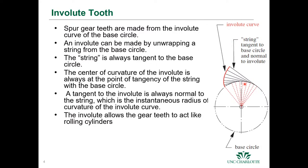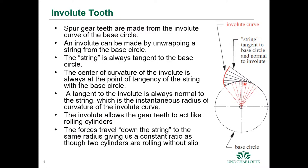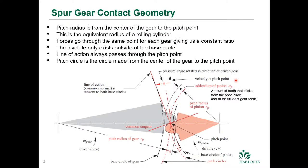The forces follow down the string to the same radius, giving us a constant ratio as though the two cylinders are rolling without slip. It's a very clever shape — the involute — and it affords us the opportunity to have gears that mesh and have a long life. When we talk about gears, there's nomenclature we have to understand.